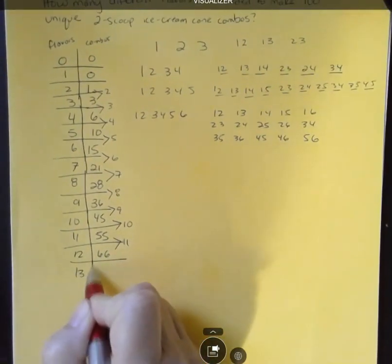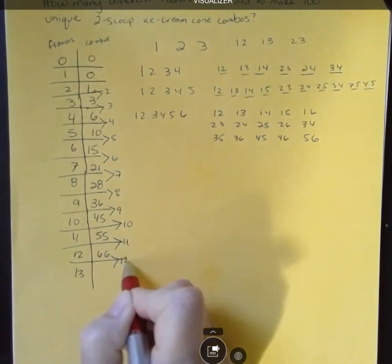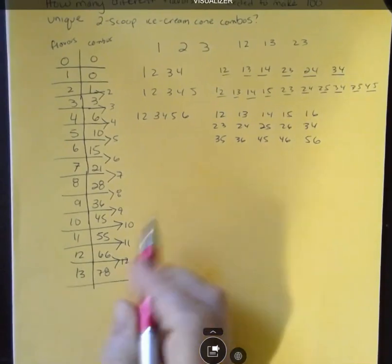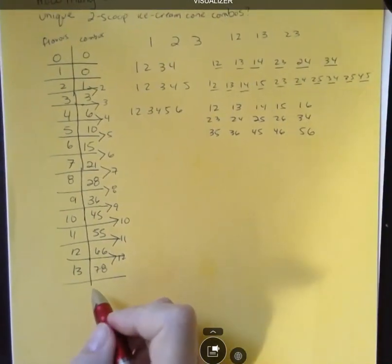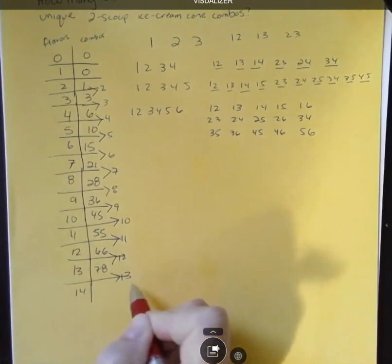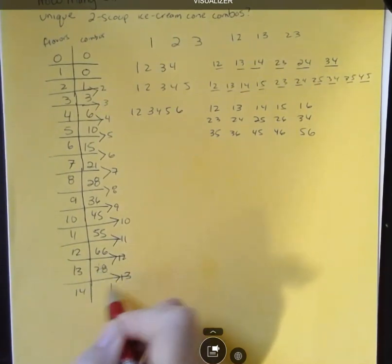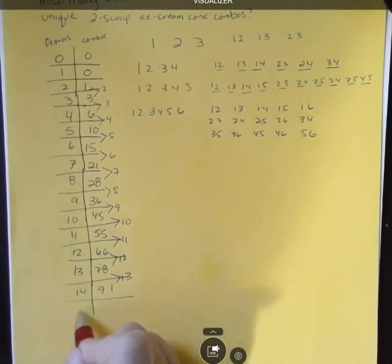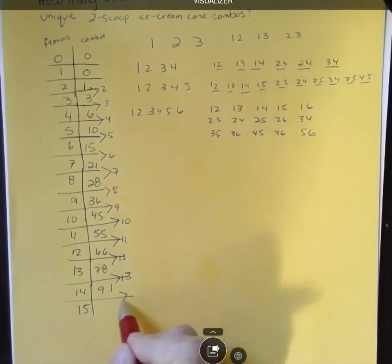And then I have 13. I'm going to add 12. That's going to give me 78. Still need more flavors to get to 100 choices. Then I'm going to add, say I have 14. I'm going to add 13. That gives me 91. Is that right? Yes. My addition didn't fail me here.